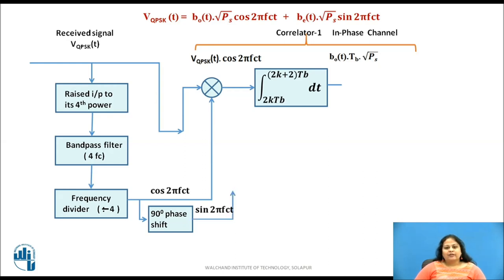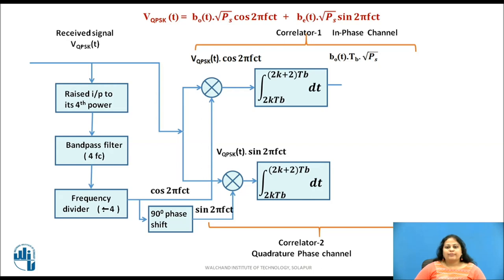Similarly, during the same symbol duration the quadrature carrier signal sin of 2 pi fct and the received QPSK signal is applied to multiplier of correlator 2 whose output is integrated in an integrator over 2 bit interval 2 tb which is equal to one symbol duration. This integrator produces an output equal to BE of t tb root of ps which is dependent only on the quadrature phase signal or even bit stream BE of t and independent of BO of t.